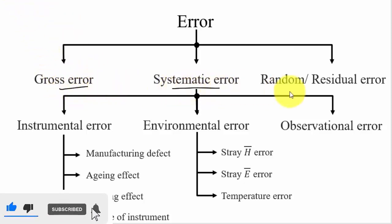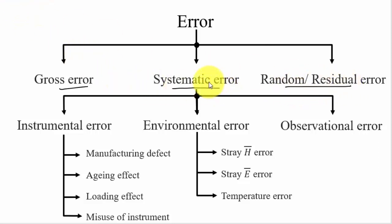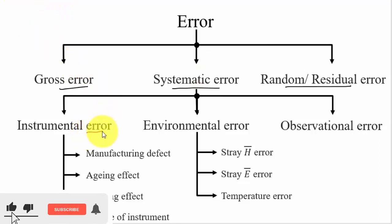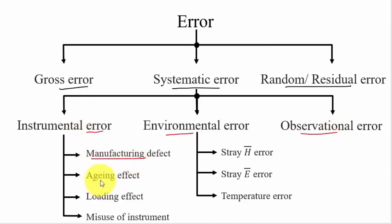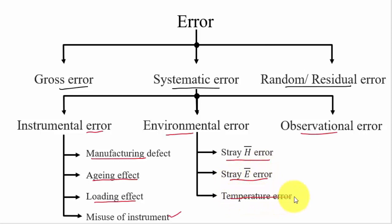Error can be broadly classified into gross error, systematic error, and random or residual error. Systematic error is further classified into instrumental error, environmental error, and observational error. Instrumental error is further classified into manufacturing defect, aging effect, loading effect, and misuse of instrument. Environmental error is caused by noise, mechanical vibrations, stray magnetic field, stray electric field, and temperature. For exams, you must know how to minimize each type of error — they may ask assertion and reasoning questions on this topic.